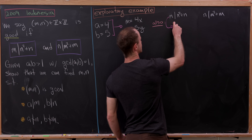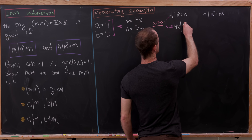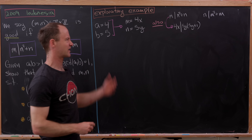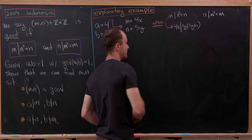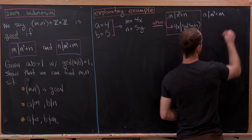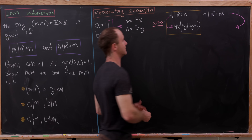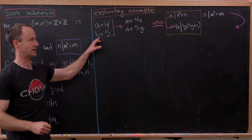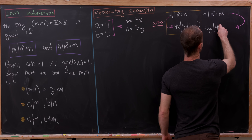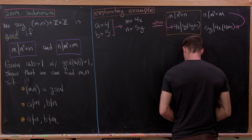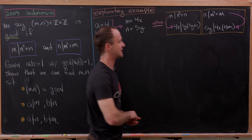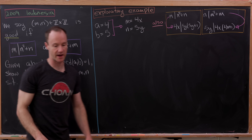This condition translates to 4x divides 5y · (5y + 1) — there I factored the n out. And then likewise, 5y must divide 4x · (4x + 1). So now we have these two interesting conditions on x and y. We've used the goodness of m and n and the divisibility of m and n by a and b, but we haven't yet used the lack of divisibility.